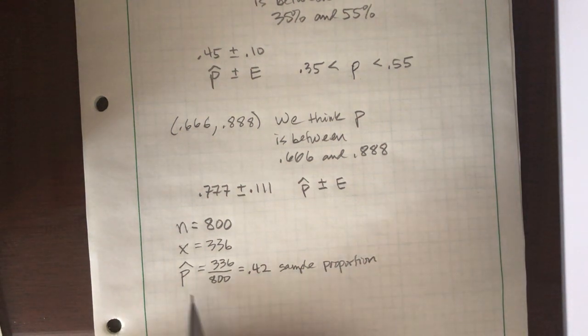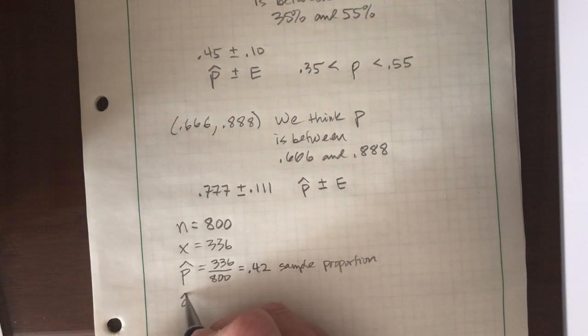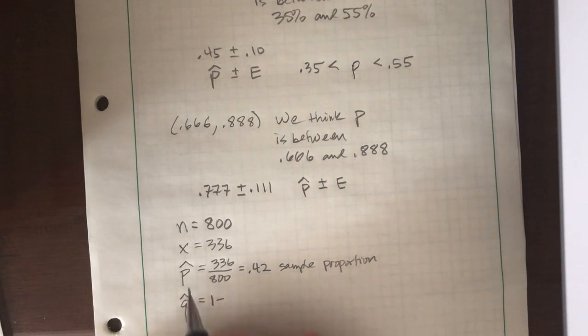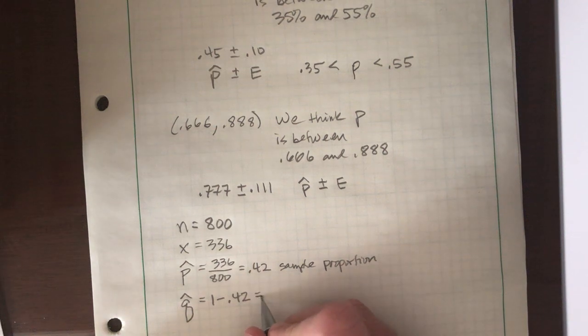Quick follow-up. Sometimes we use the letter q in certain calculations. There is something called the q hat you'll want to know about. And again, p and q are always complements. So if you're told p hat is 42%, then q hat would be 0.58 or 58%.